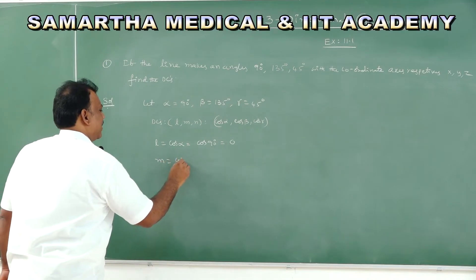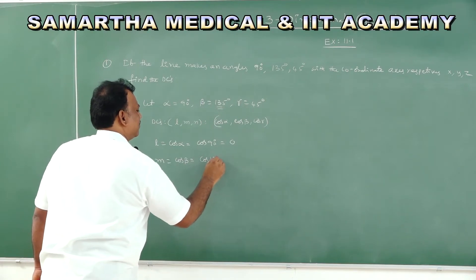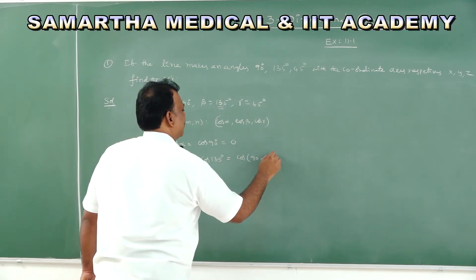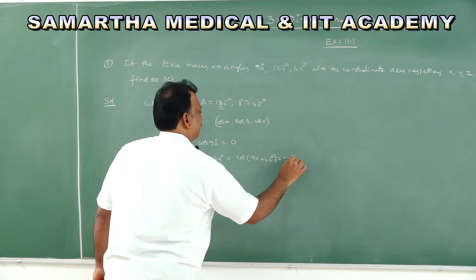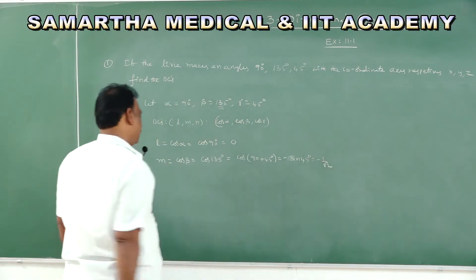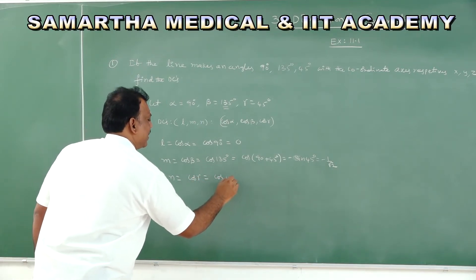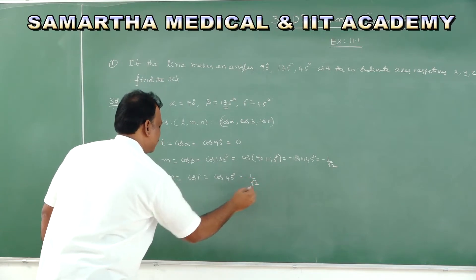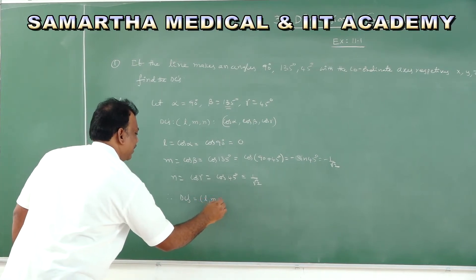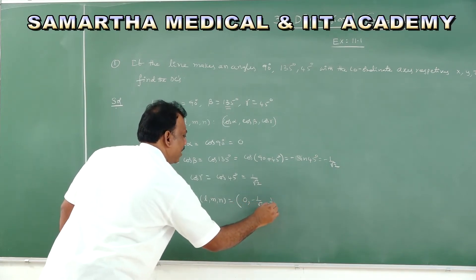M = cos β = cos 135° = cos(90° + 45°). It is in the second quadrant, so M = −sin 45° = −1/√2. Next, N = cos γ = cos 45° = 1/√2. Therefore, direction cosines (L, M, N) = (0, −1/√2, 1/√2).